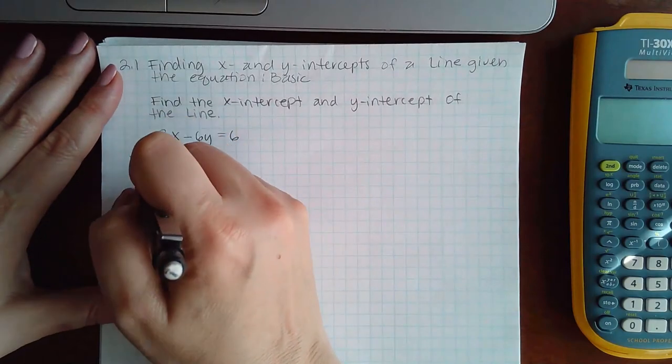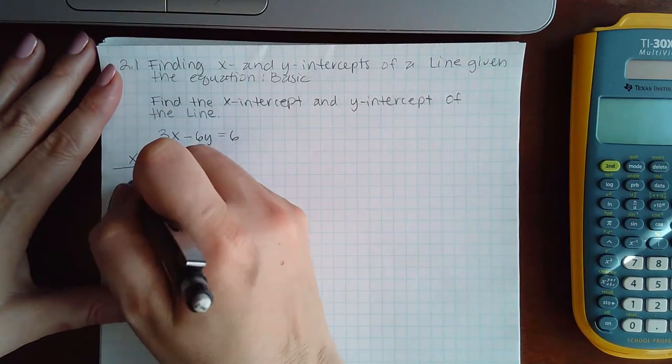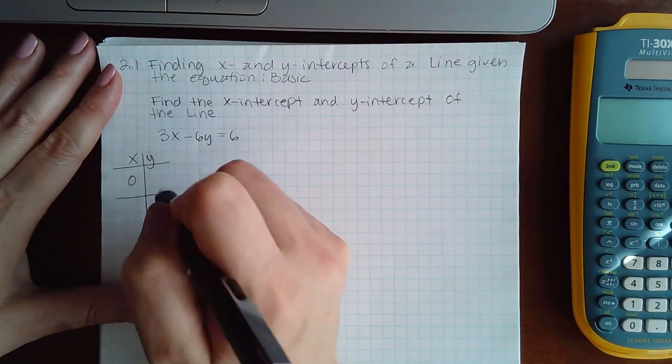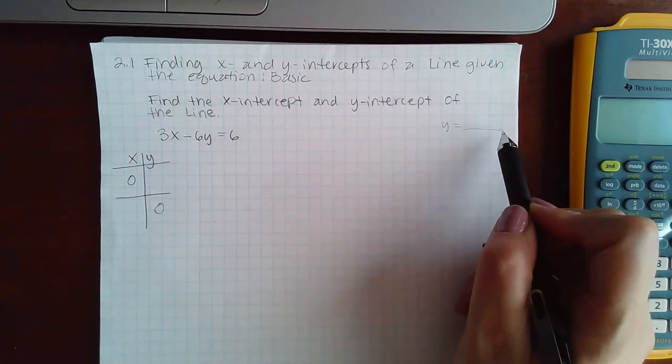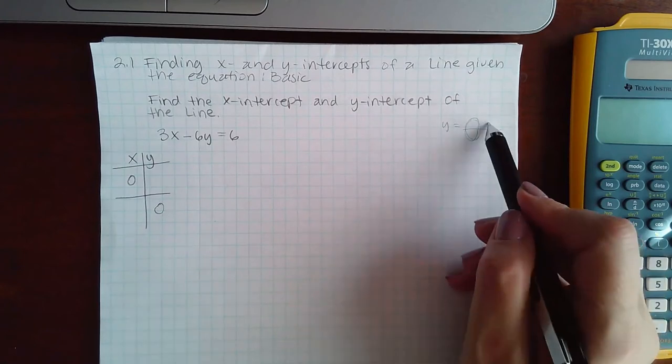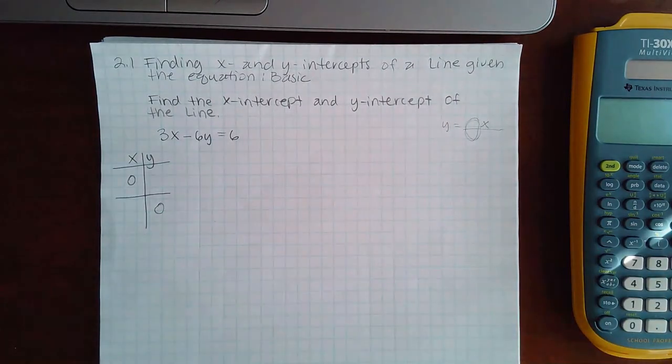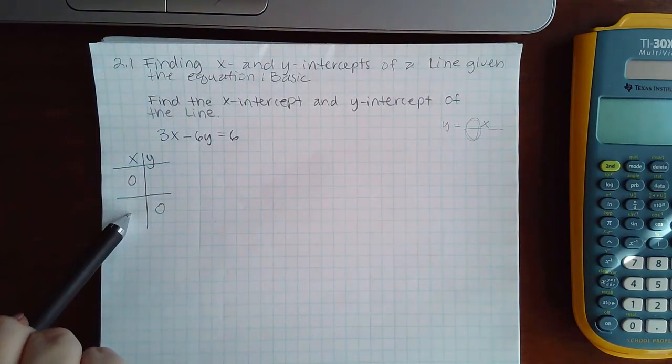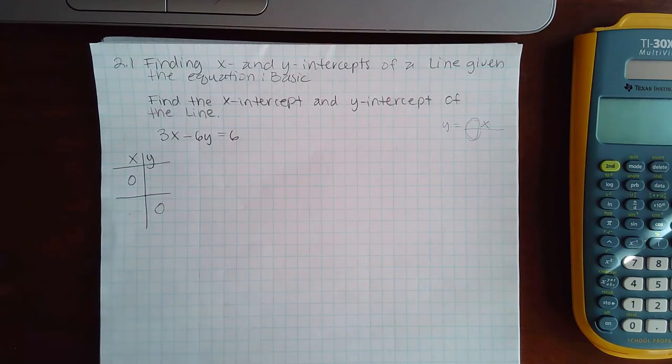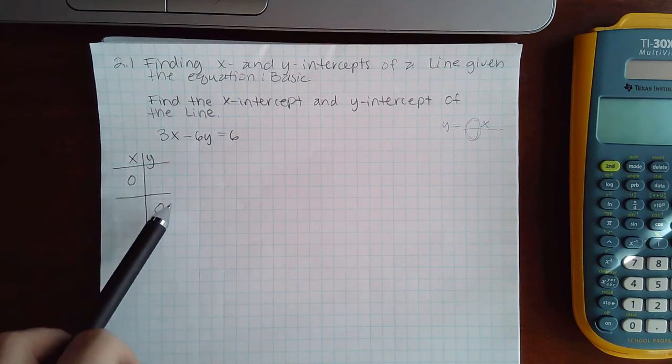When I was doing the problem before, I was using zero for x and zero for y because I didn't have it in the form y equals something where I could tell if there was a fraction in front of x or not. I don't have it in that form, so I can't decide to use x and the denominator in front of x. I don't have that luxury, so instead we used zero for x and zero for y.